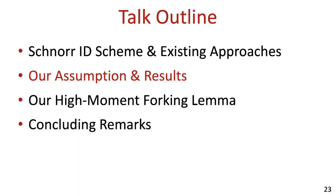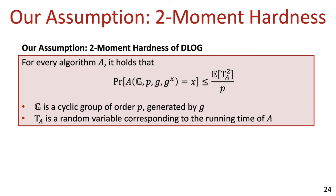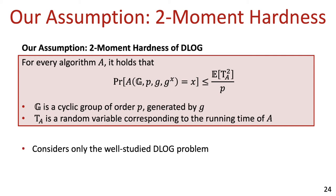We are now ready to present our refined assumption on the hardness of the D-log problem. Consider an algorithm A for computing discrete logarithms in a cyclic group of order p generated by g. Our assumption is that for any such algorithm A, the probability that it succeeds in computing the discrete log of a uniformly random group element with respect to g is bounded by the expectation of t_A squared over p, where t_A is a random variable corresponding to the running time of A. We call this assumption the second moment hardness of the D-log problem. A major upside of this assumption is that it only considers the well-studied D-log problem and doesn't introduce any new problems. Additionally, this assumption holds in the GGM, as implied by Shoup's original proof and observed by Jaeger and Tessaro.